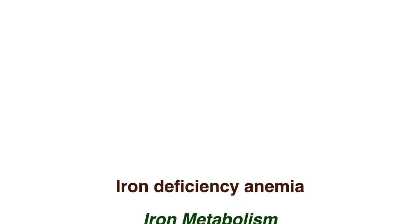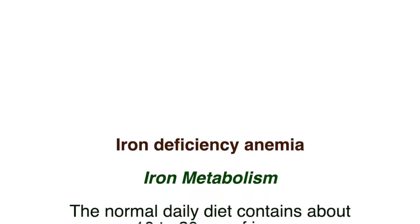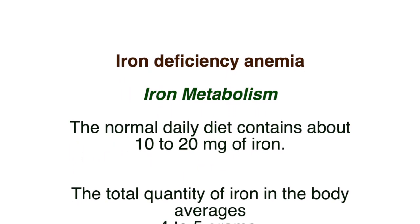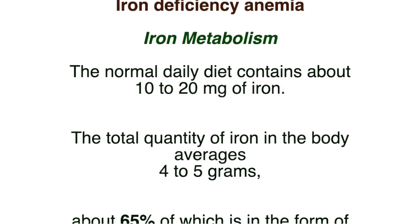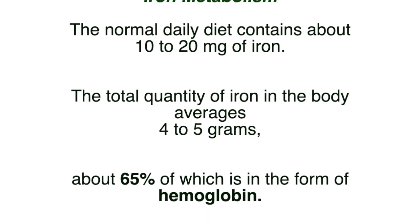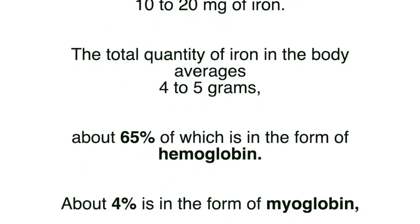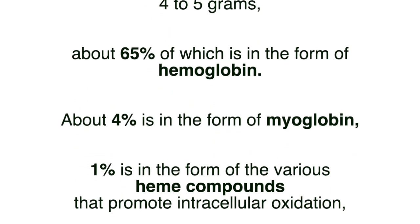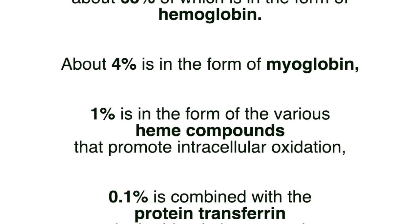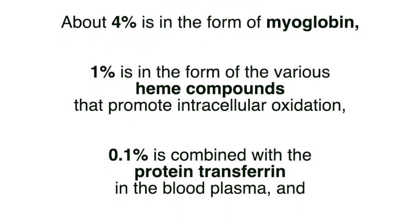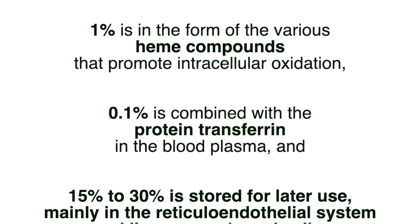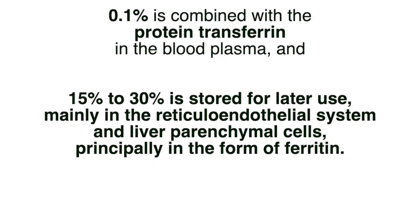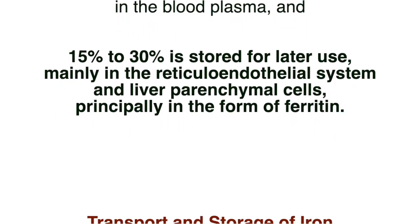Iron Deficiency Anemia — Iron Metabolism: The normal daily diet contains 10-20 mg of iron. The total quantity of iron in the body is 4-5 grams: 65% is in the form of hemoglobin, 4% as myoglobin, 1% in heme compounds promoting intracellular oxidation, 0.1% combined with transferrin in the blood plasma, and 15-30% stored mainly in the reticuloendothelial system and liver parenchyma cells, principally as ferritin.